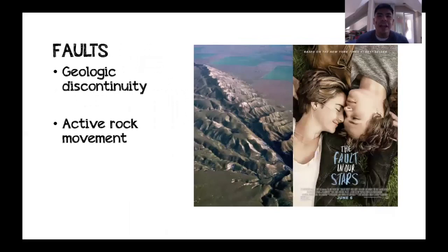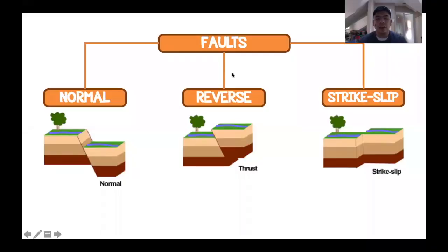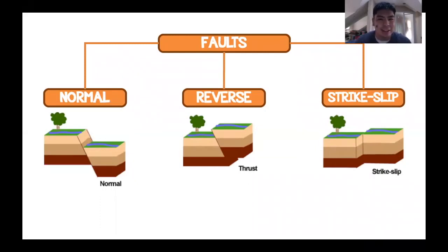A fault is a geologic discontinuity on the earth's surface and is also indicative of active rock movement. There are three kinds of faults: the normal fault, the reverse fault, and the strike-slip fault.